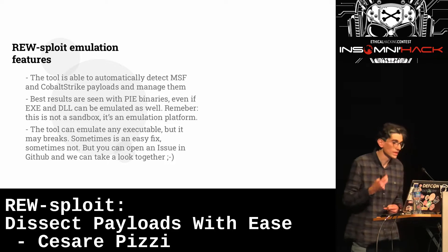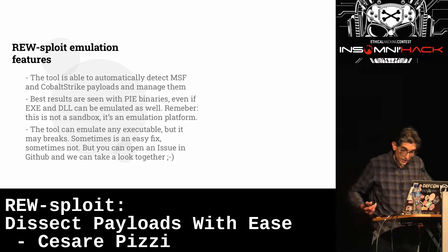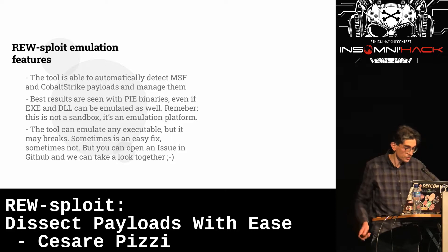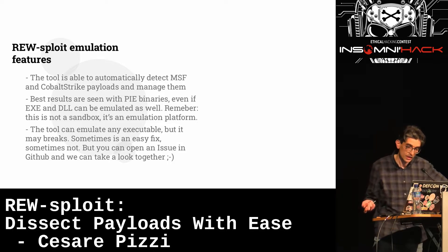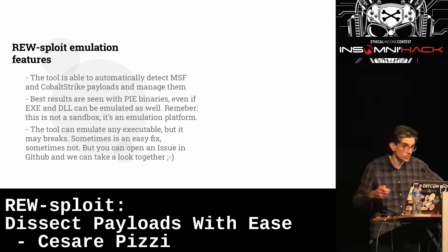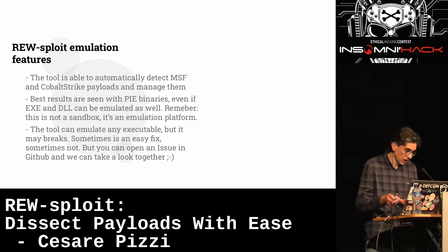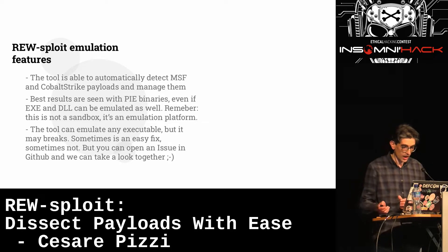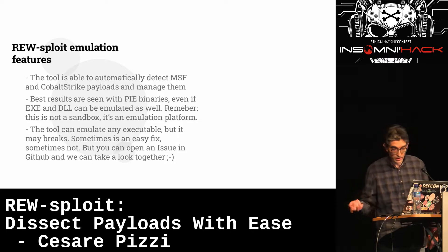Let's now understand what RE-sploit's emulation feature can actually do. The tool automatically detects Metasploit and Cobalt Strike payloads and can extract artifacts from them. Best results are seen with position-independent binaries. Executables and DLLs are emulated but are a bit more complex — sometimes you have to help the emulator with add-ons to get it running properly.